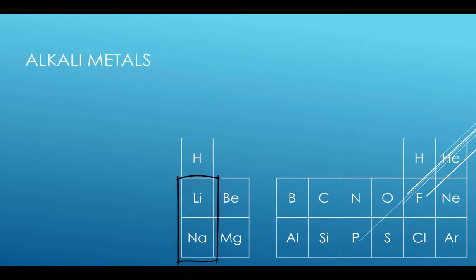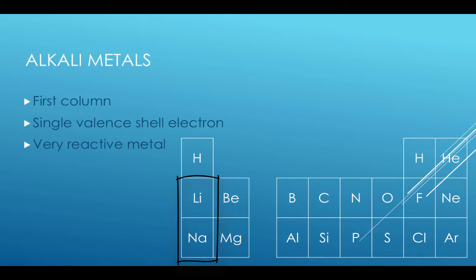The alkaline metals are the metals in the first column just below hydrogen. All of these metals have a single valence shell electron. They are all extremely reactive, often exploding when mixed with water.